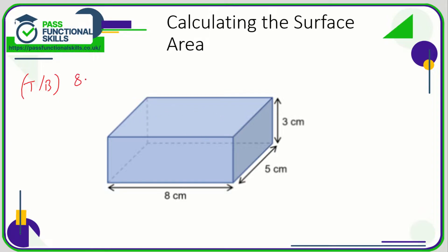Because there is a top and a bottom, we're going to do eight times five multiplied by two. We've also got two sides, so the area of one side is five times three, so both sides is going to be five times three times two.